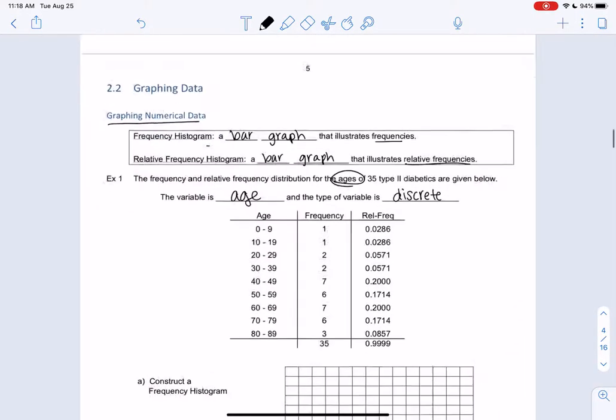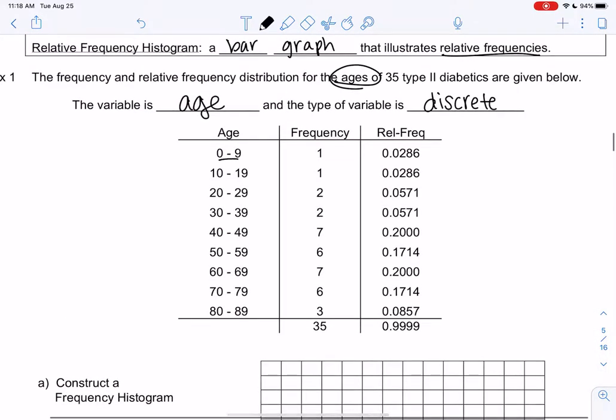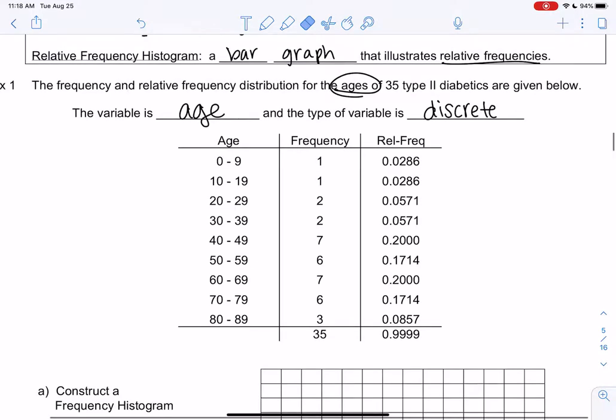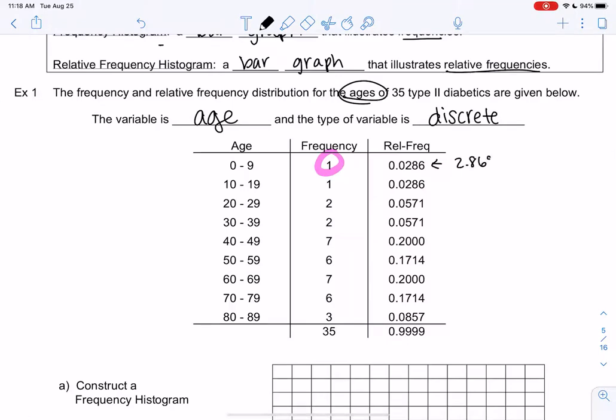So we do zero through nine, 10 through 19, and so on. Those are our ages. Frequency tells us how many people. We like relative frequency, so 0.0286 tells me about 2.86 percent. So it's not very common in zero to nine, but if you jump to 40 through 49, it's 20 percent. And that tells me that type 2 diabetes is maybe a little bit more common in this age group.